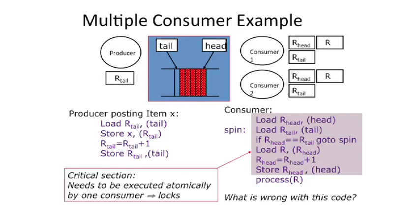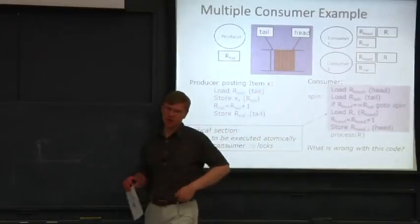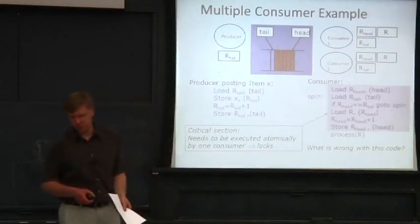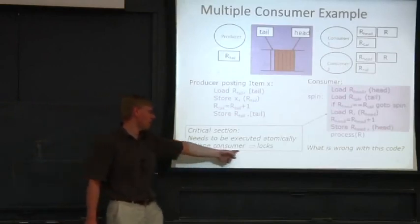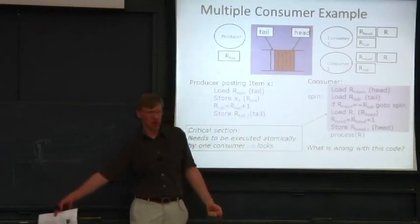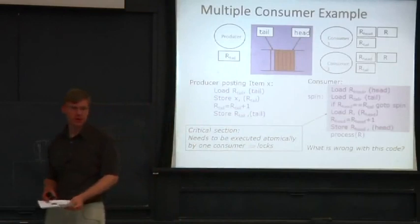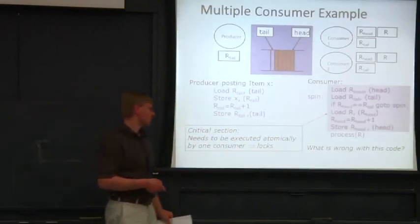So we're going to call this a critical section. If you take an operating systems class, you will have seen this a bunch. And the idea here is that you want to atomically execute from all the consumers possible this block of code here. So no two consumers could begin to execute that block of code at the same time. And one way to do that is you have a lock on that piece of code. So you grab a lock, you can go execute that piece of code, and then you release the lock.